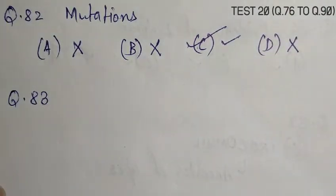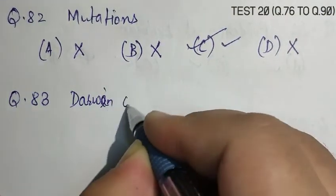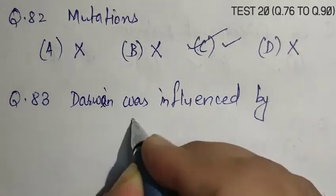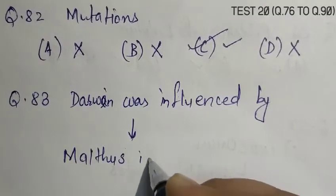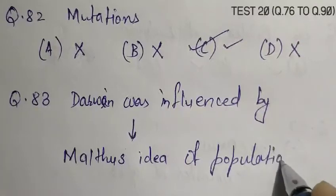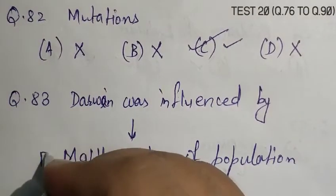Question number 83, In forming the theory of evolution by natural selection, Darwin was greatly influenced by. Darwin was influenced by Malthus's idea of population. So, the correct answer is B.